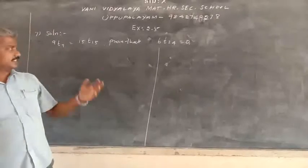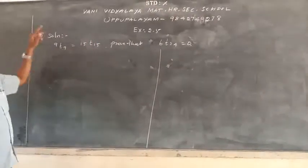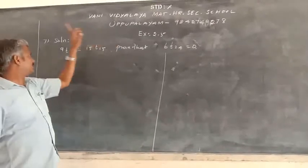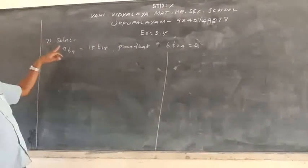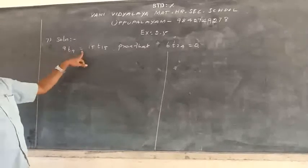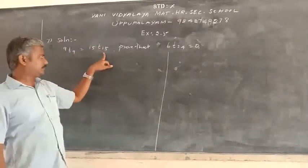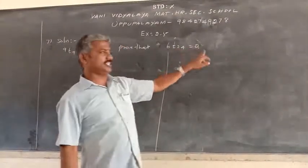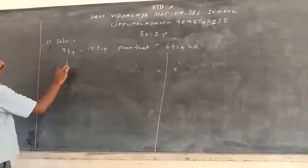Good morning students. Last class was Exercise 2.5. 6 is something is written down. We took Exercise 2.5, 7th sum. 9 times 9th term is equal to 15 times 15th term. Prove that 6 times 24th term is 0. So now TN formula.